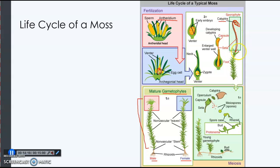The sporophyte is the capsule and stalk that grows up out of the gametophyte plant — all the part shown in the green box. Inside the calyptra is where the spores are produced. The spores are haploid. The calyptra will open up and burst, the spores will land on the ground, grow into the gametophytes, and the cycle will start over.